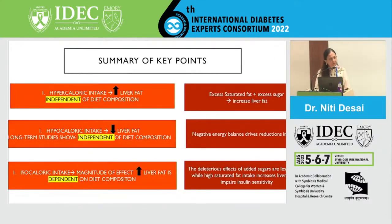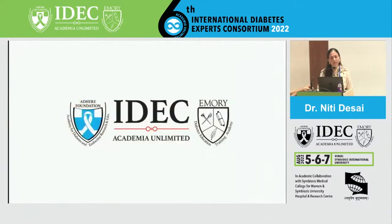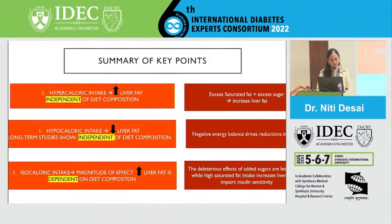To summarize these three kinds of studies: with hypercaloric intake in obese individuals, the increase in liver fat is independent of diet composition — extra saturated fat and sugars both lead to increased liver fat. With hypocaloric intakes, there is a reduction in liver fat, and long-term studies show it is independent of diet composition — a negative calorie balance alone produces the reduction. When diets are isocaloric and compared, the magnitude of effect depends on diet composition, with the most deleterious effects seen with saturated fat followed by sugars.